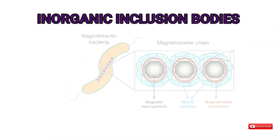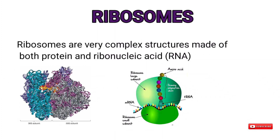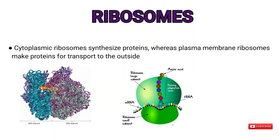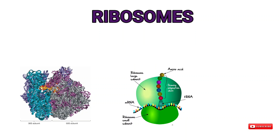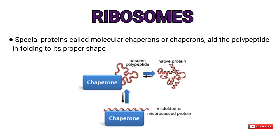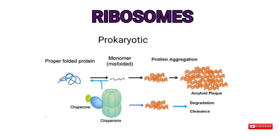Ribosomes are very complex structures made of both protein and ribonucleic acid (RNA). They are the sites of protein synthesis. Cytoplasmic ribosomes synthesize proteins; plasma membrane ribosomes make proteins for transport to the outside. The newly formed polypeptide folds into its final shape either as it is synthesized by the ribosome or shortly after completion of protein synthesis. The shape of each protein is determined by its amino acid sequence. Special proteins called molecular chaperones aid the polypeptide in folding to its proper shape.